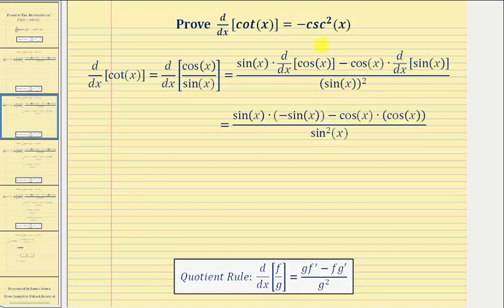Now we'll find the derivatives. The derivative of cosine x is equal to negative sine x, and the derivative of sine x is equal to cosine x. Notice how we also can rewrite sine x squared as sine squared x.